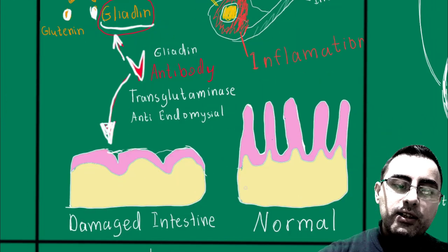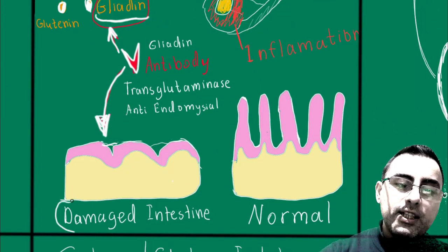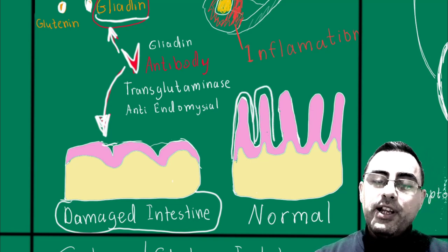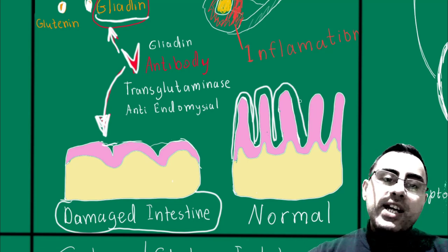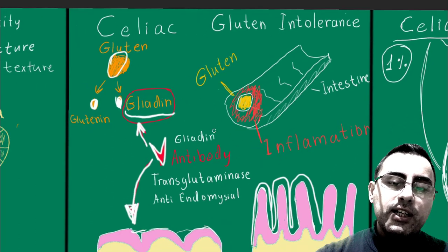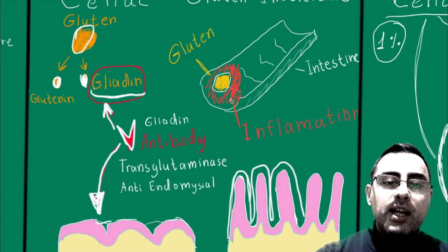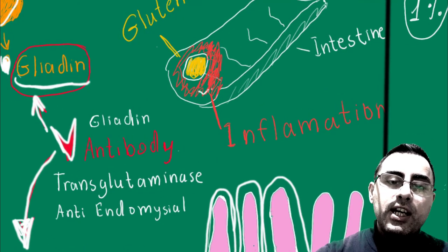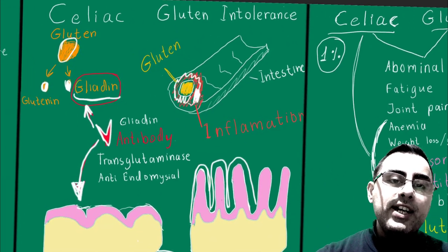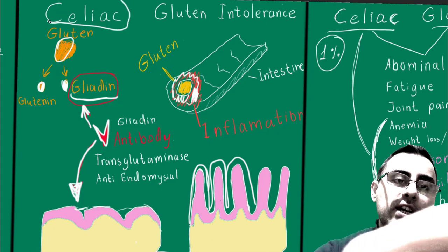You can see here: on the left is damaged intestinal lining and on the right is normal intestinal lining. We have villi here, and these villi are destroyed in the case of celiac disease. A much milder form of celiac disease is gluten intolerance. Gluten intolerance has almost the same mechanism, but antibody production is not widespread.